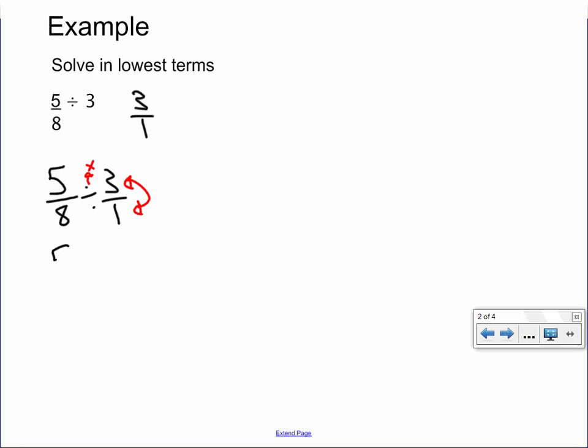So if we do that, we will get 5 out of 8 times 1 over 3. And then when we get this, all we have to do is just multiply across, and we'll get our answer. So 5 times 1 is just 5. 8 times 3 is 24. And there we go. There's our answer. And we can't even bring this down anymore, because 5 and 24 don't have any more common denominators.